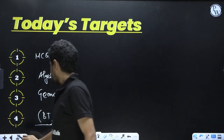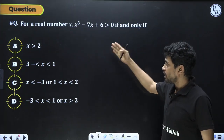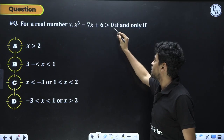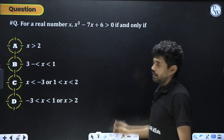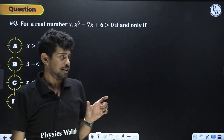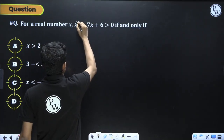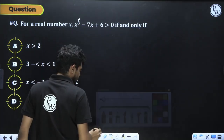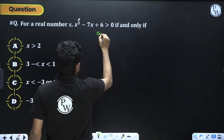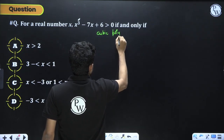Let us get started with the first question. For a real number x, x³ - 7x + 6 > 0, if and only if. This is a cubic polynomial — the highest degree is 3. A cubic polynomial is either greater than 0 or less than 0; you might wonder there are two ways to solve this.